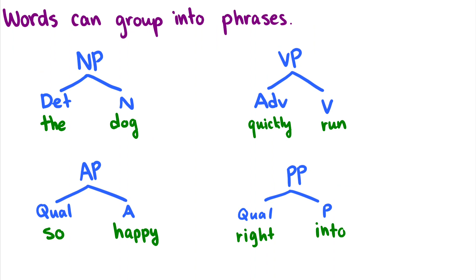The last important point of this video is that words can group into phrases. All of our lexical categories — nouns, verbs, adjectives, prepositions, and adverbs — build up into things called phrases, represented by an 'P' suffix. For instance, a noun phrase consists of a determiner and a noun, so 'the dog' is a unit that might serve as the subject of a sentence. Verb phrases can break into adverbs and verbs.